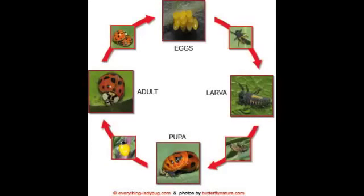First, the ladybug is an egg. Then it turns into a larva. The larva attaches to a leaf and becomes a pupa. And when the pupa hatches, it becomes an adult ladybug.